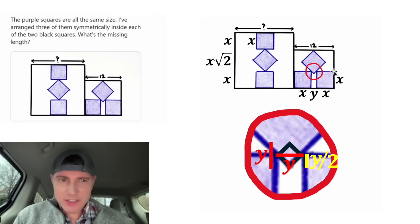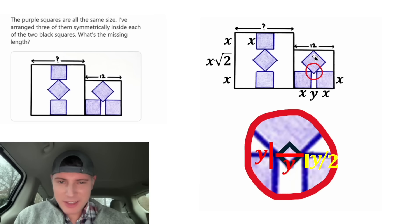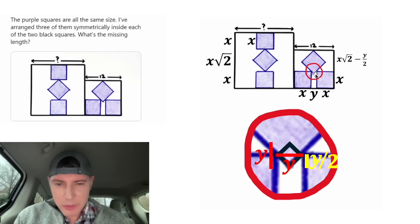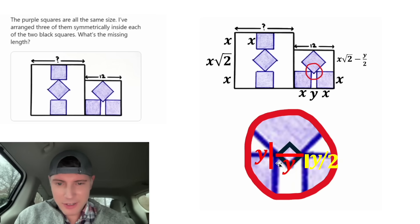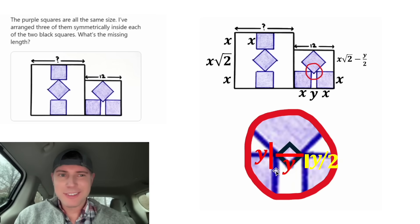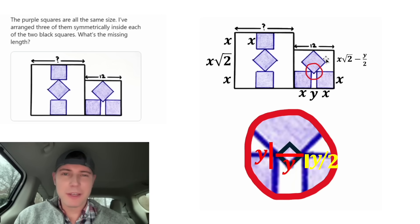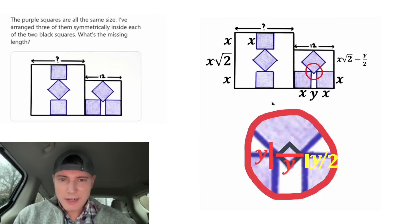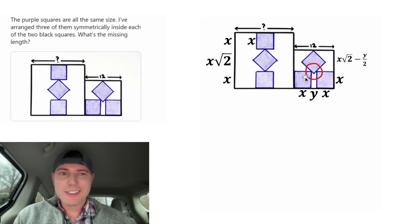To get this piece is a little tricky. We're going to take the entire diagonal, X root two, but we need to subtract this little piece dangling down, and that's going to be half of Y. So we're going to subtract Y over two. This part's kind of tricky to explain — I hope it makes sense. And now we've got enough to set up some equations.